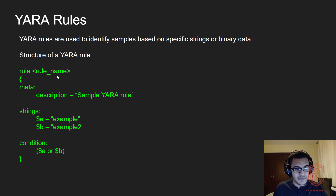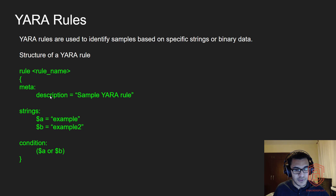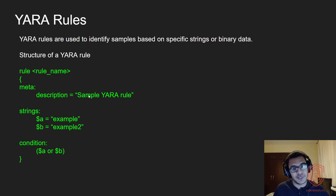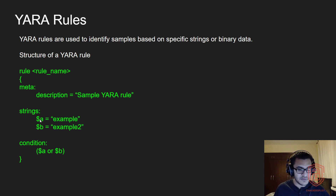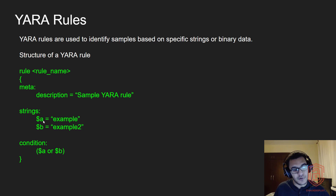So the structure of a YARA rule or the syntax is as follows: you have the rule keyword, and then you have your rule name. You then have your meta section, which is not really required, and gives you a description of the YARA rule — so you can add information about its functionality. You then have strings, where you're specifying values that can either be hexadecimal, strings themselves, or regex if you want. You specify them with the dollar sign and then the name of the variable.